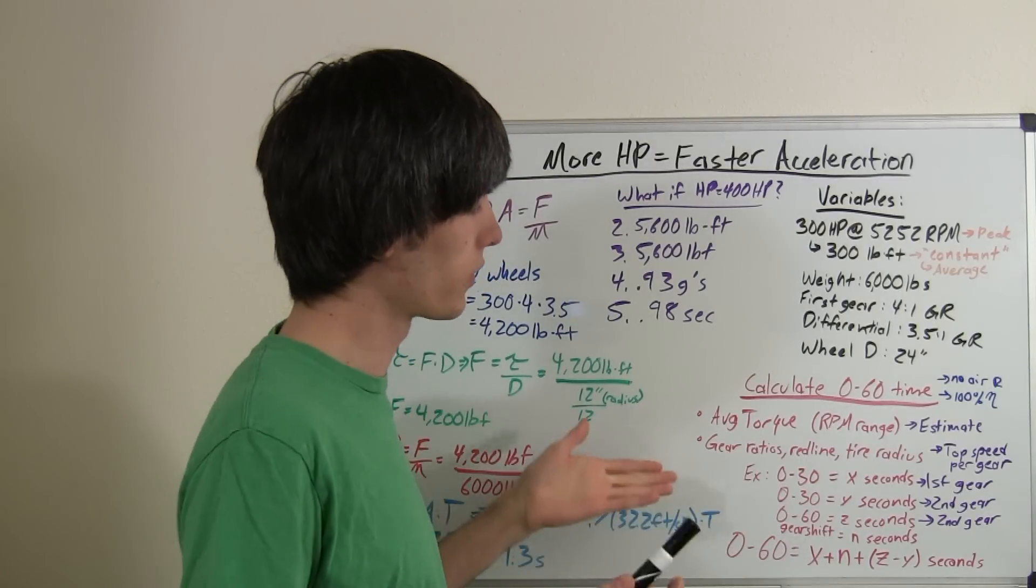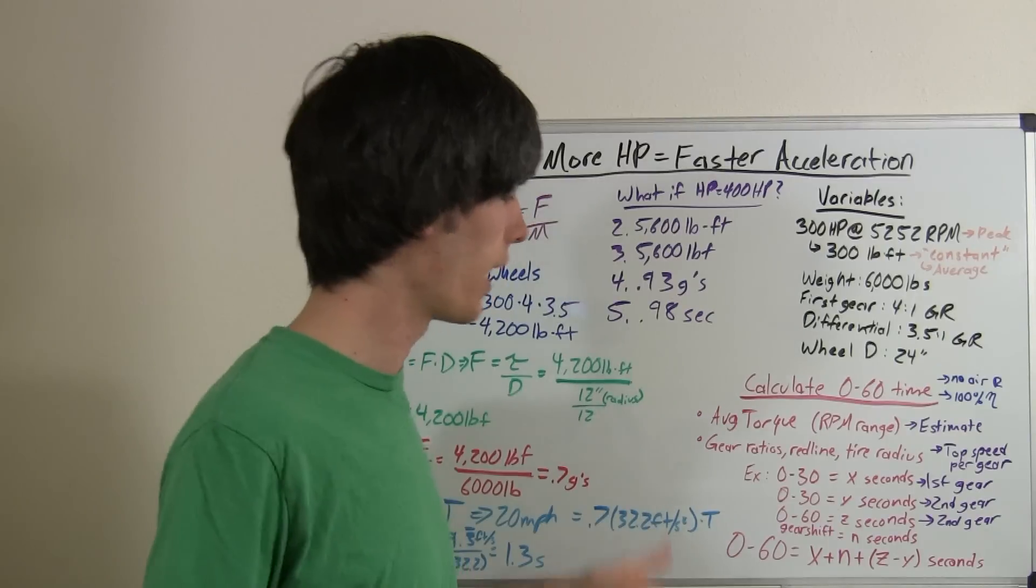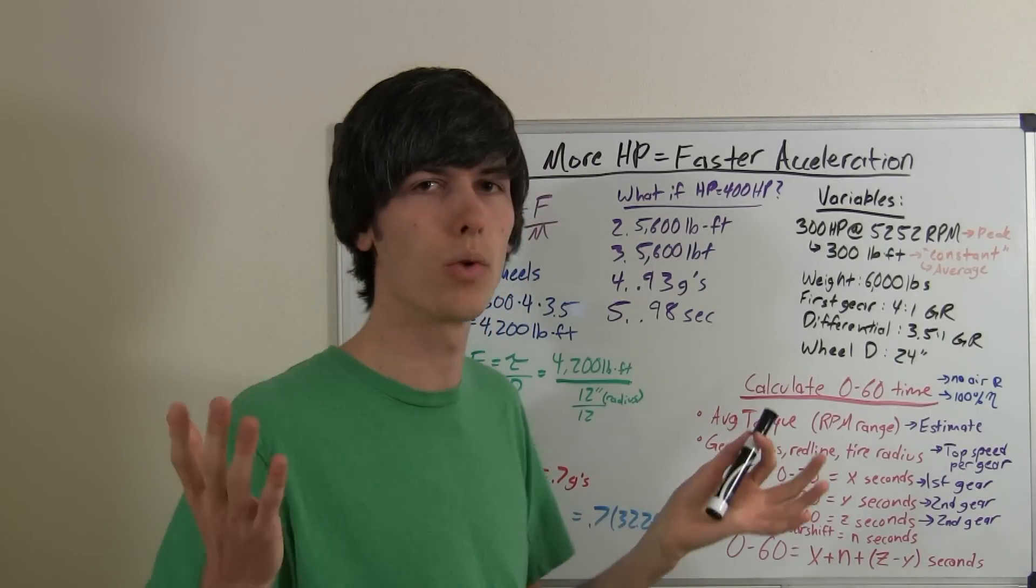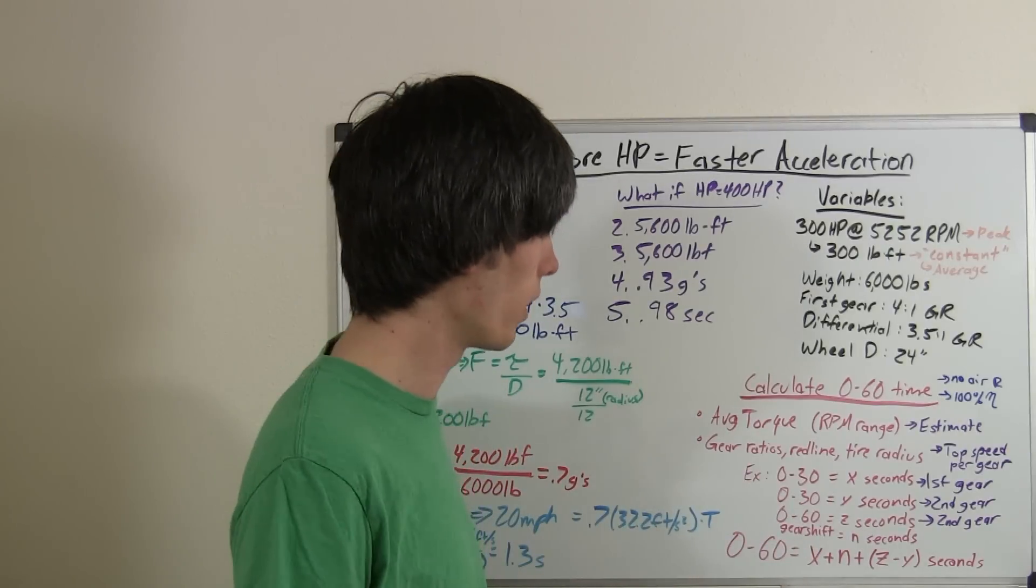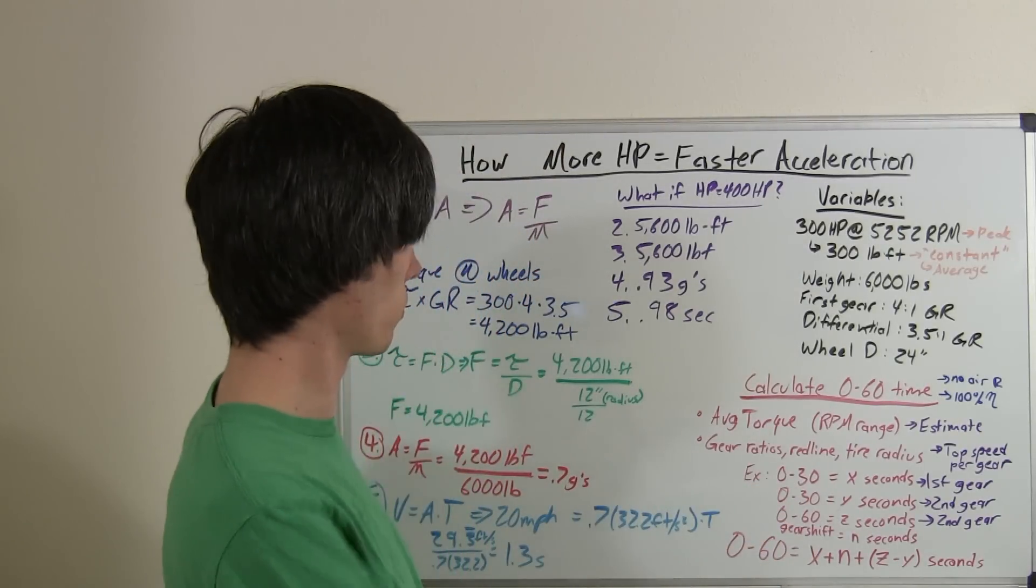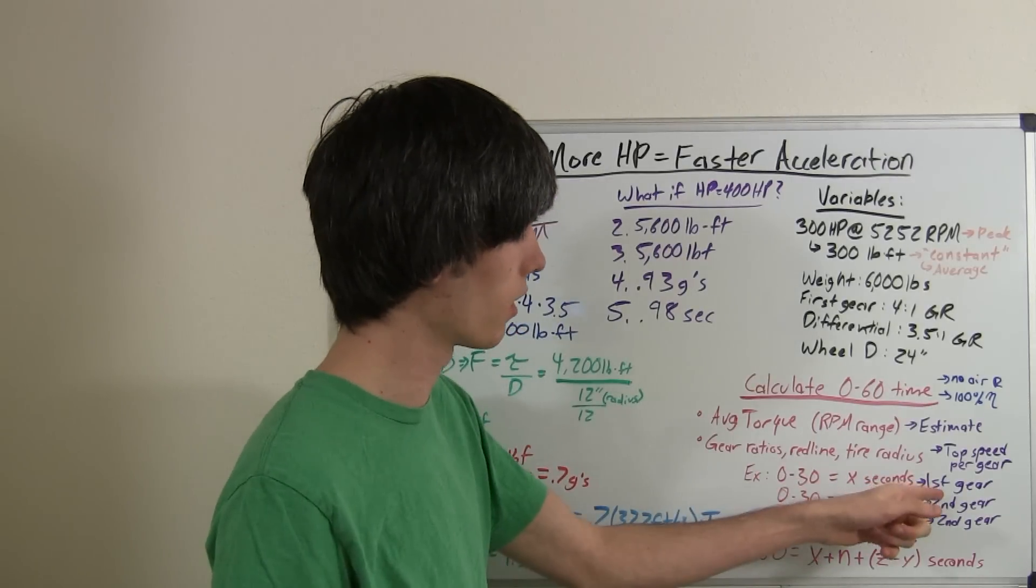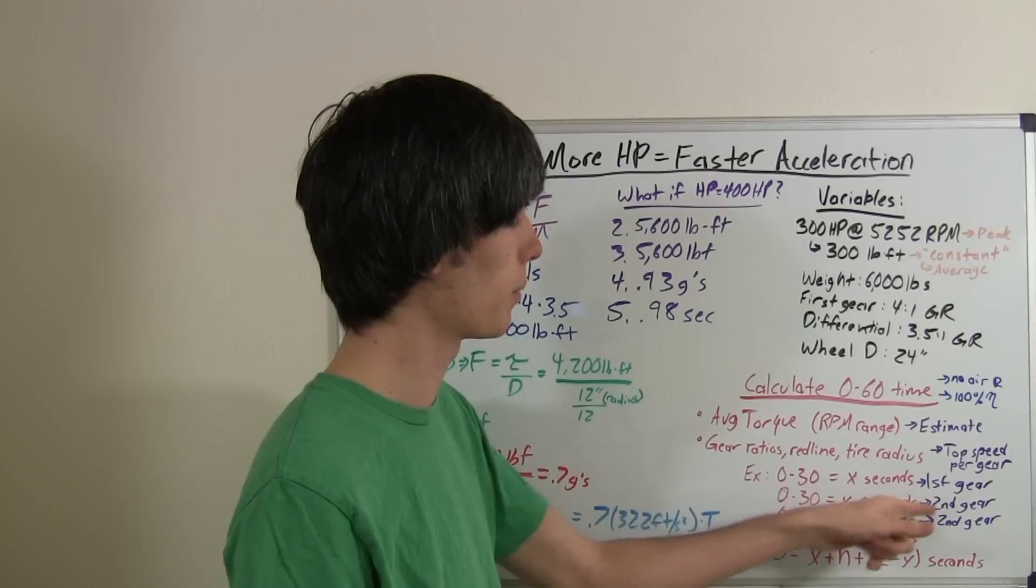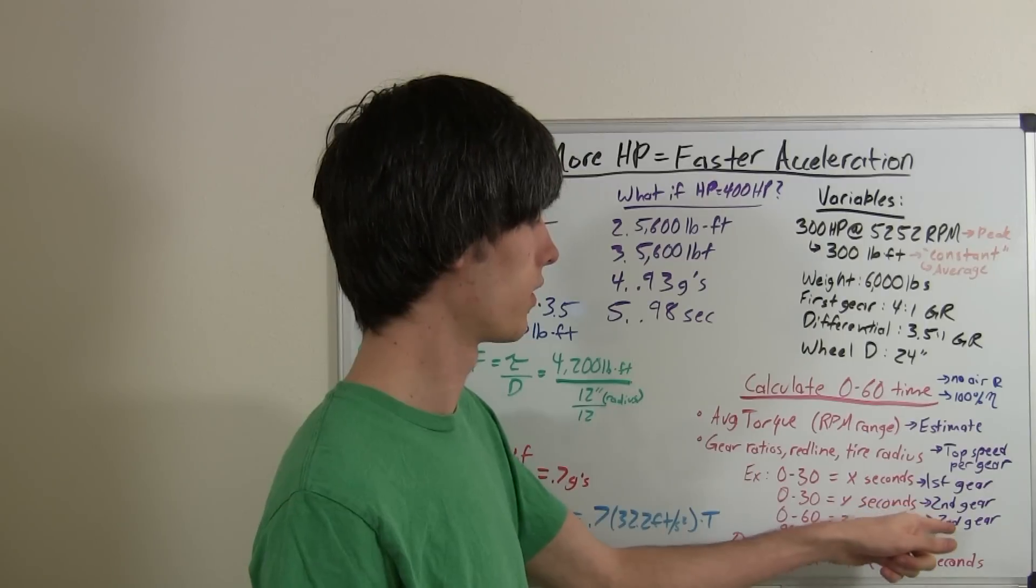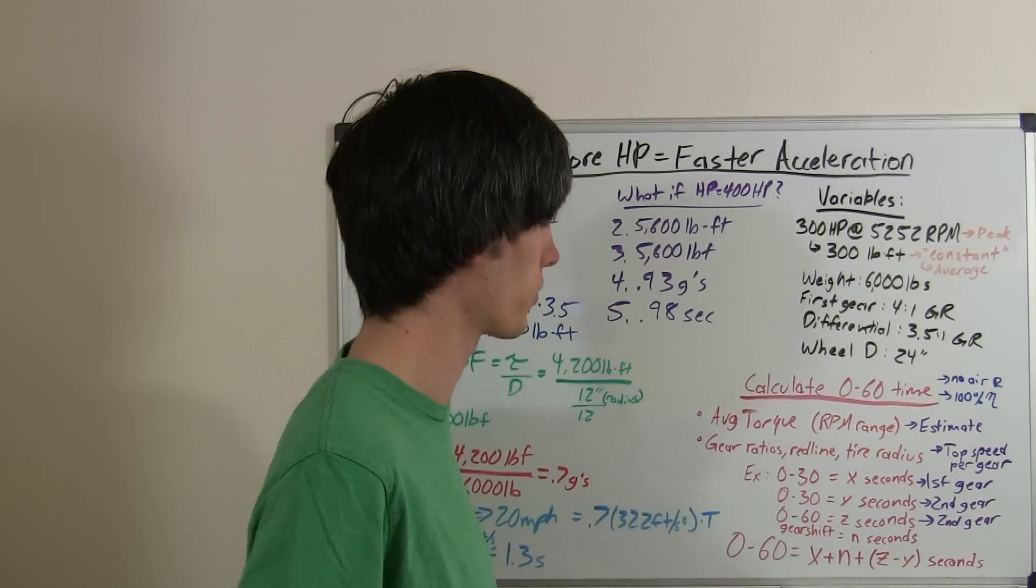Now, let's say, for example, you have a car that's first gear ends at 30 miles an hour, and its second gear ends at 65 miles an hour or something, and you want to calculate the 0 to 60. Well, you'll just take the 0 to 30 time, which was done through the same equations we've got here. In first gear, you'll take the 0 to 30 time in second gear, the 0 to 60 time in second gear, and the time that it takes to shift gears between first and second.